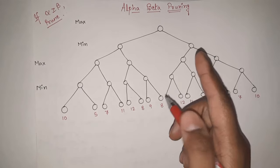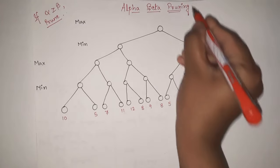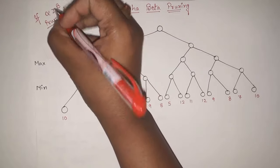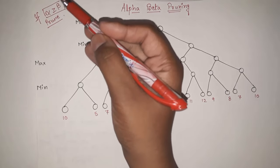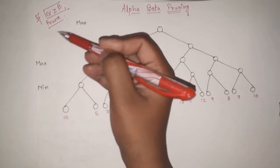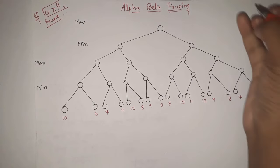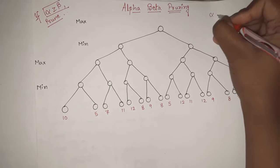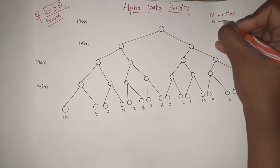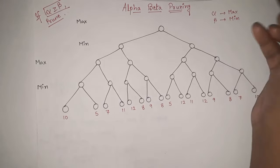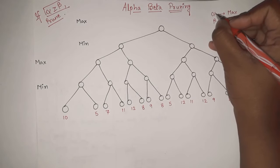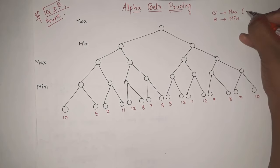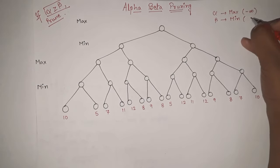The main condition in alpha-beta pruning, as the name itself indicates, is that we are going to prune the unnecessary branches. You need to remember this condition: whenever alpha will be greater than or equal to beta, we are going to prune that branch. Now, what is alpha and beta? Alpha will denote the max and beta will denote the min. The default value of alpha is minus infinity and the default value of beta is infinity.